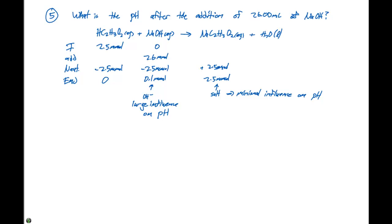Once we are beyond the end point, our pH is dictated by our excess OH minus ions. For our sodium hydroxide, we're going to have 0.1 millimoles in excess.